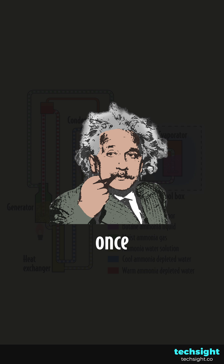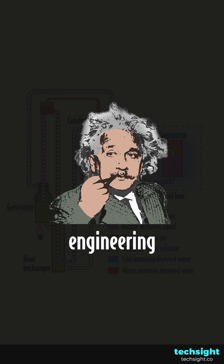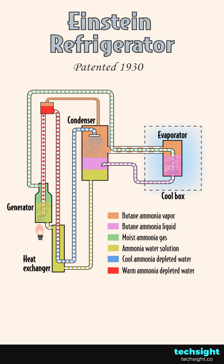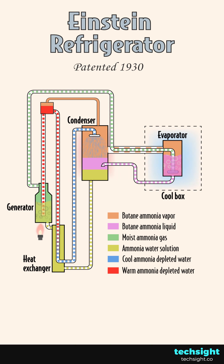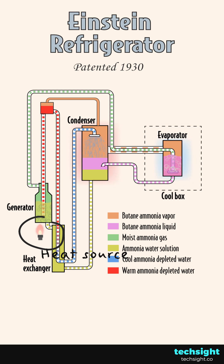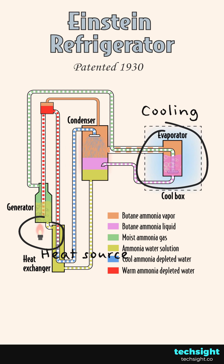Albert Einstein once had a go at engineering, and the result was pretty cool — not that type of cool. He designed a refrigerator, and believe it or not, it used a heat source to provide cooling. Let's have a look at how.